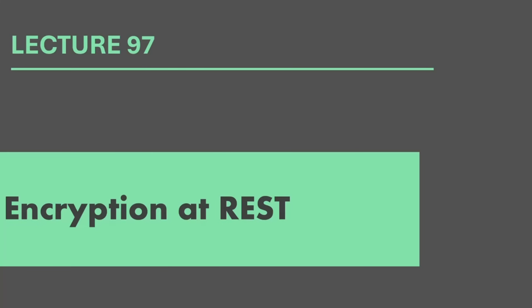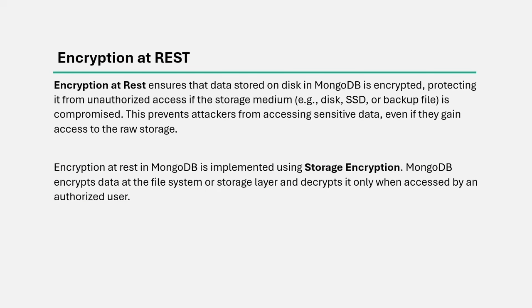In the last lecture, we learned how we can encrypt data while sending it over a network using SSL/TLS transport encryption. However, you might also want to encrypt the data saved on the disk in MongoDB server, and this is called encryption at rest. Encryption at rest ensures that the data stored on disk in MongoDB is encrypted, protecting it from unauthorized access if the storage medium is compromised. This prevents attackers from accessing sensitive data even if they gain access to the raw storage, because the data stored on the MongoDB server is encrypted.